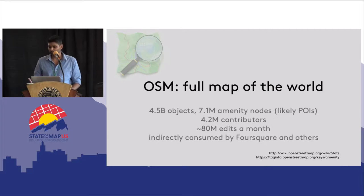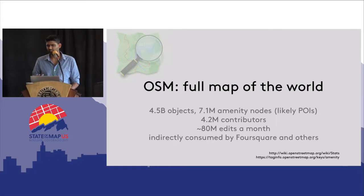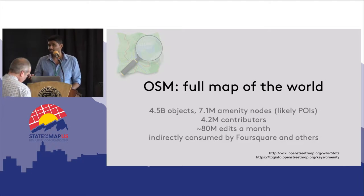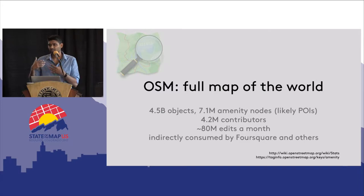OSM, on the other hand, is a full-blown map of the world that also has some POI data. There are about 4.5 billion objects, of which 7.1 million are amenity nodes — that's potentially how many are POIs, though not necessarily all of them. OSM has 4.2 million contributors making about 80 million edits a month. And just like in our case, OSM's data is indirectly consumed by many, many more users than you have contributors, including Foursquare users on the web, where we use Mapbox tiles to show people maps.